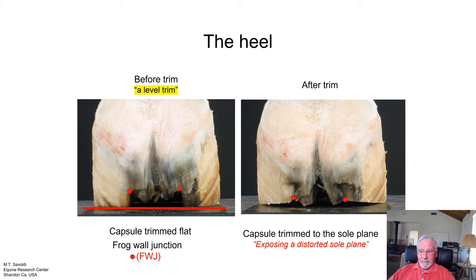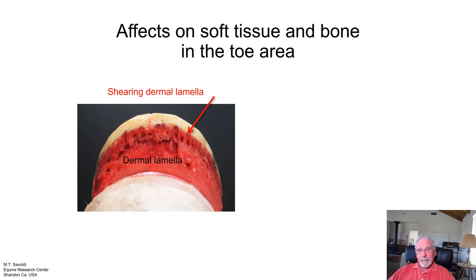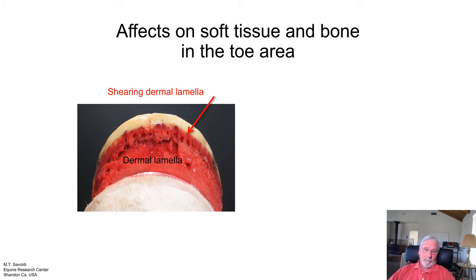After trimming to the sole plane, we can see that we do not have a level sole plane on this horse and it needs a lot of help. Shearing to the dermal lamina: as the bone sinks into the foot, the lamina is going to get pulled apart, pulled away from the wall — and that's what we see here.